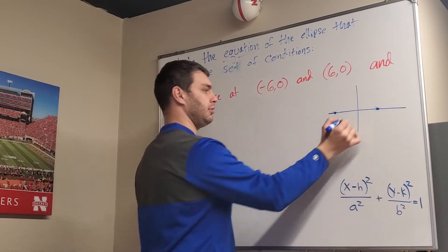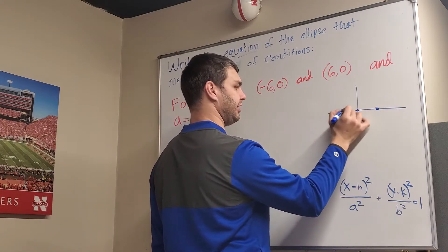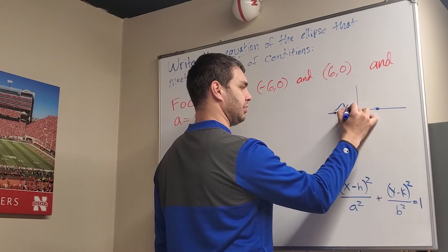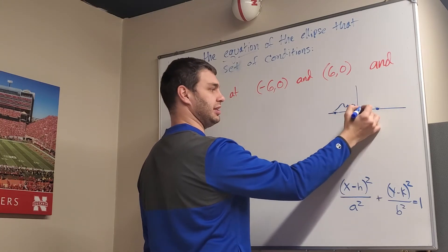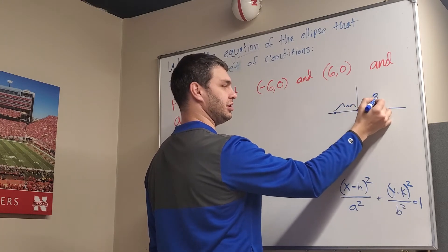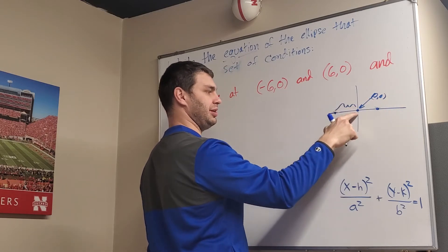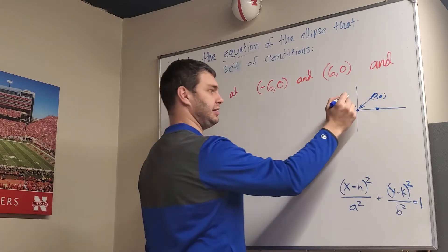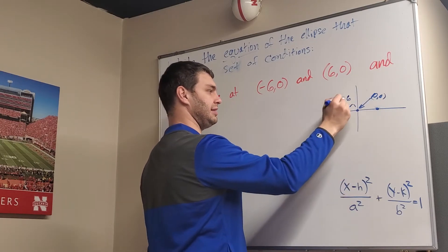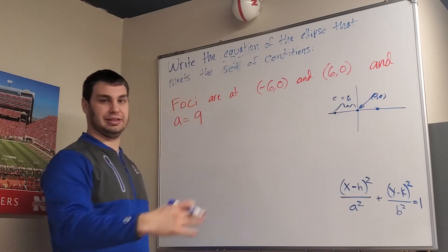Which means, if this is my distance from the center of the ellipse, the center here is going to be the origin (0,0). And that distance between the center and the foci is 6 - that's going to be my c value when I talk about my a's, b's, and c's later.